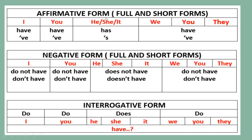The informative form is like a positive form. We have full and short forms that you can write two ways. For example: 'I have' — the full form — or 'I've' — the short form, written with an apostrophe. So: I have, you have, he/she/it has, we/you/they have.